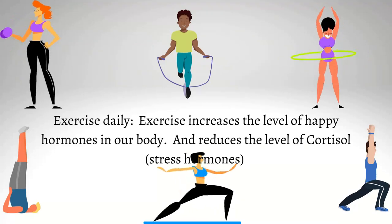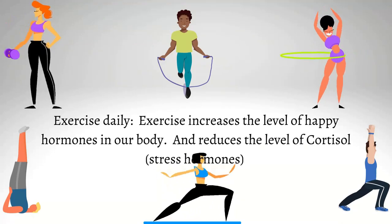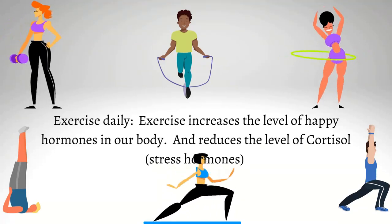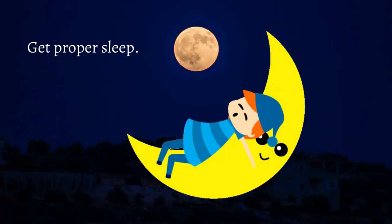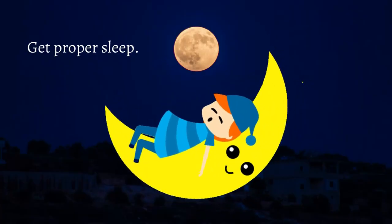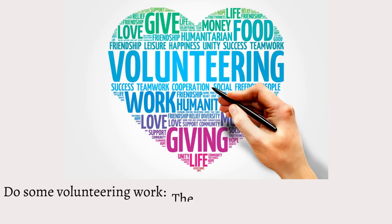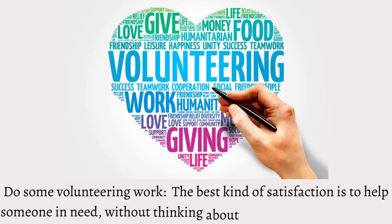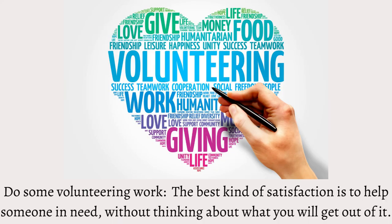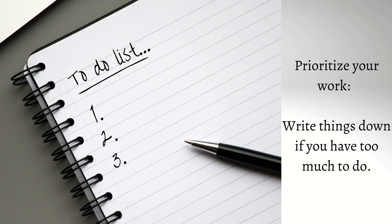Exercise daily — exercise increases the level of happy hormones in our body and reduces the level of cortisol, the stress hormone. Get proper sleep. Do some volunteering work. The best kind of satisfaction is to help someone in need without thinking about what you will get out of it. Prioritize your work and write things down if you have too much to do.